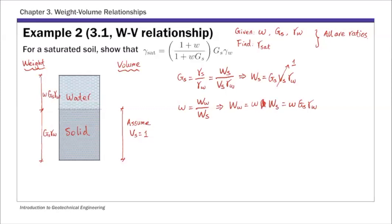Now we've completed the weight side. The only unknown left is the volume of water. We solve for volume of water using the unit weight of water definition: unit weight of water equals weight of water over volume of water, so volume of water equals weight of water over unit weight of water. Substituting, this is just moisture content times GS.